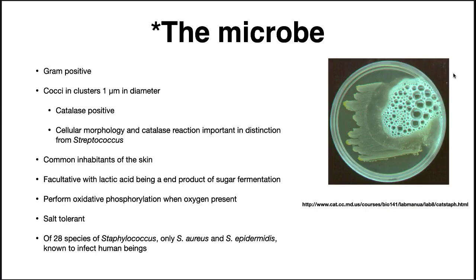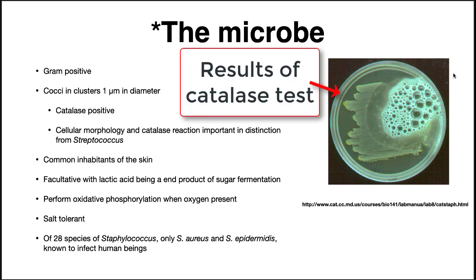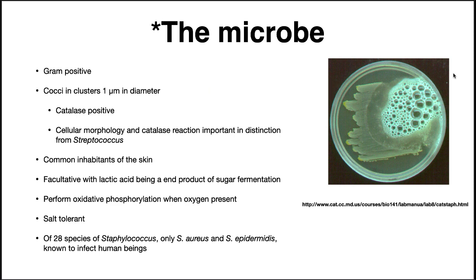Staphylococcus aureus is a gram-positive cocci of about 1 micron in diameter. It forms grape-like clusters, and the word staphyli in Greek means bunch of grapes, hence the name of the species. S. aureus is catalase-positive, and the catalase reaction is important in distinguishing it from another dangerous pathogen, the streptococci.